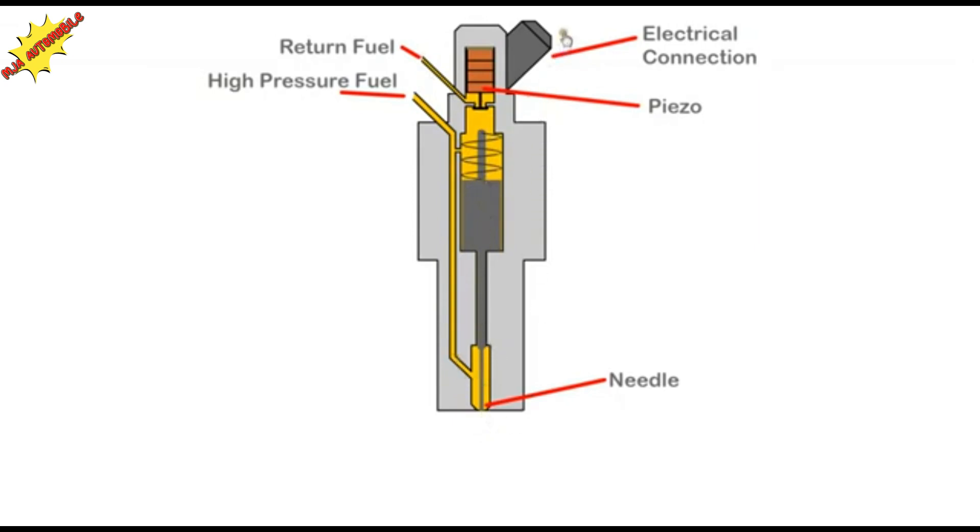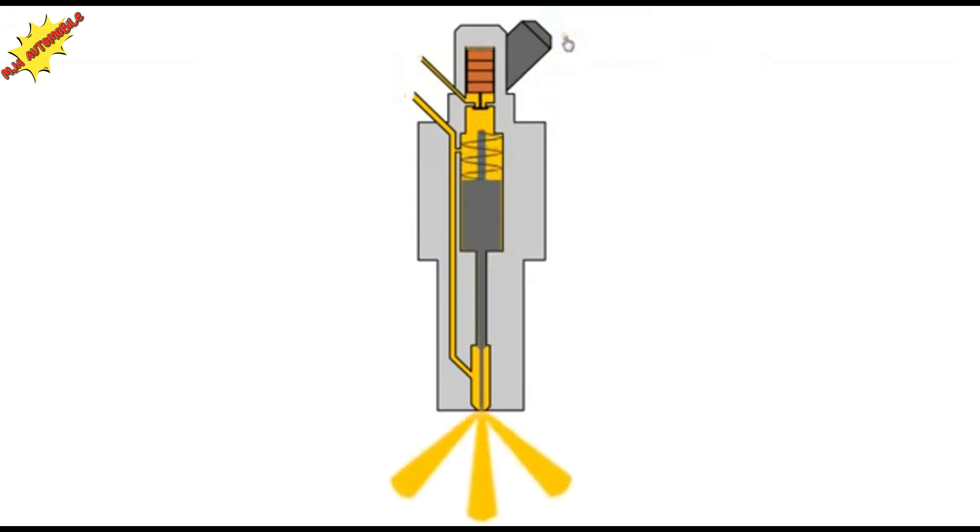Then the crystal is de-energized, the valve closes, and high pressure diesel closes the injector. In a modern car, there might be three phases of injection: pre, main, and post injection. This provides a controlled form of fuel, reducing noise and increasing power and efficiency.